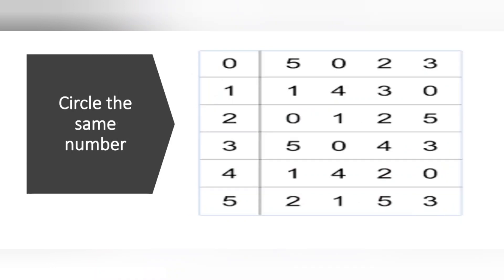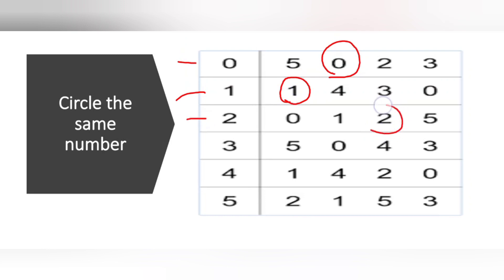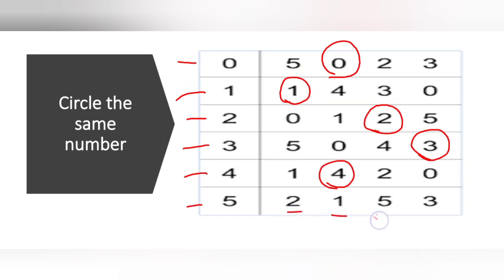Circle the same number — you have to circle the same number in the same row. In this row, where is the number 0? Here it is. In the second one, where is the number 1? In the 1st position — we have to circle there. Where is the number 2 in this row? Here. Where is the number 3? At the last. 4? In the second position. And number 5? In the third position. Correct — you got it. Very good.